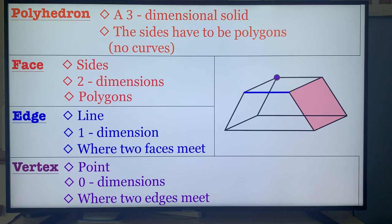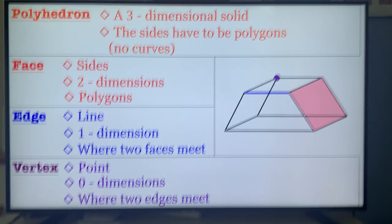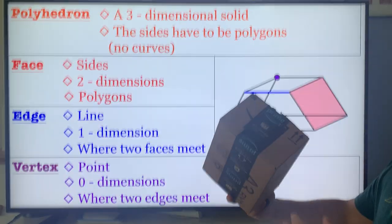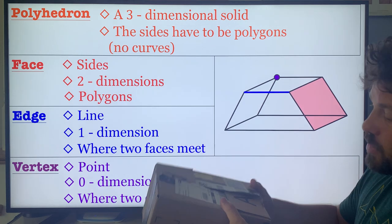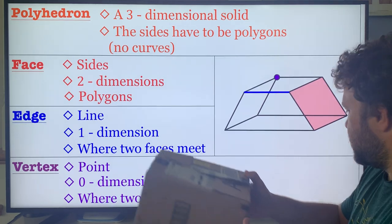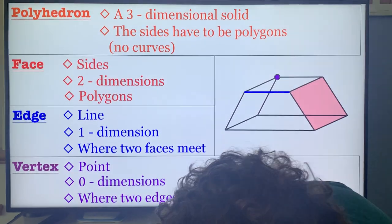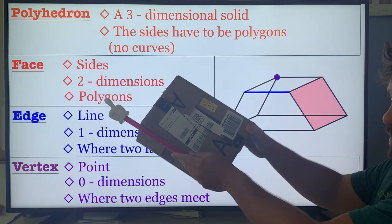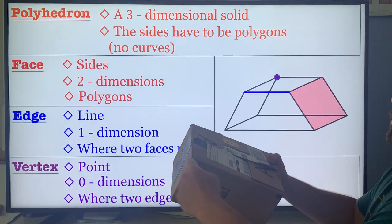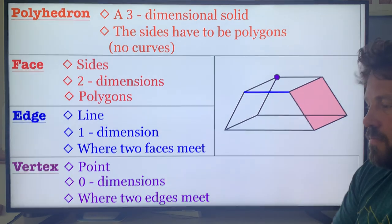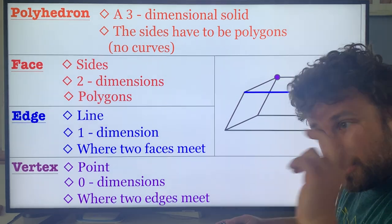The easiest way to describe this is with a box. I just so happen to have a box laying around — you guys may have heard of Amazon. Say this box is my polyhedron. This flat surface is the face. This line that runs and connects the side to the top would be my edge. And this corner piece right here, where the two edges meet, would be my vertex. And you can recycle that — always recycle, care for the earth.